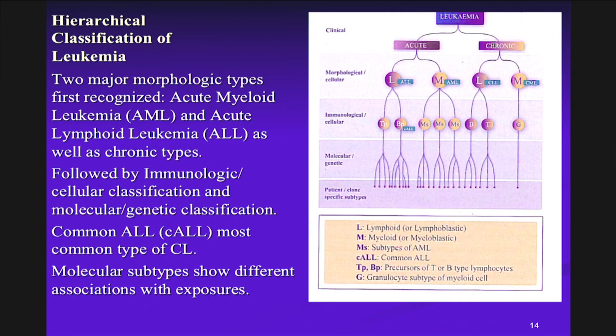Leukemia in children and adults is classified initially morphologically into myeloid or lymphoid types, acute as well as chronic. With further research, immunologic classifications were added, and then molecular classifications. These are very important in terms of our studies.